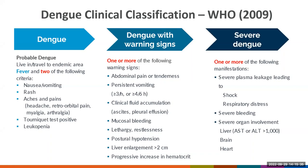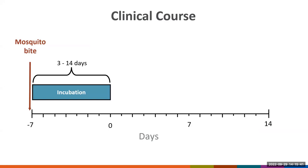We also need to be aware of the clinical course of dengue. After the patient is bitten by the mosquito, the incubation period is usually short — 4 to 7 days — but it can go as long as 14 days. Remember that most dengue infections will be asymptomatic or will result in mild disease. In symptomatic patients, the typical clinical course of dengue has three phases: febrile, critical, and convalescent.